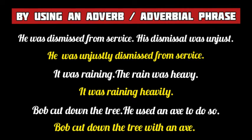By using an adverb or adverbial phrase, we may also combine two separate simple sentences into a new simple sentence. We use the adverb 'unjustly' in place of the second simple sentence to form: He was unjustly dismissed from service. The adverb 'heavily' is used in place of the second sentence to form: It was raining heavily. And in the last example, 'Bob cut down the tree' and 'he used an axe to do so' — the second sentence indicates the means or instrument, so we use the adverbial phrase 'with an axe': Bob cut down the tree with an axe.